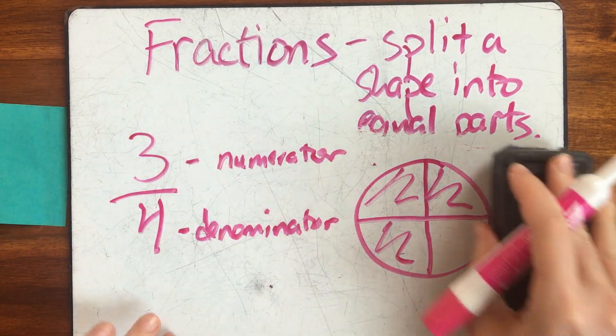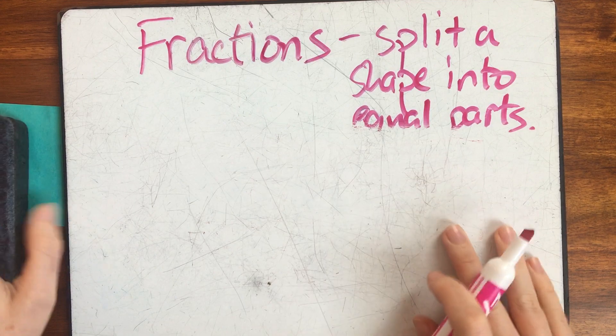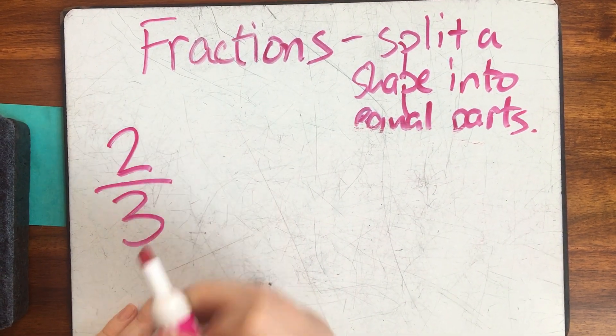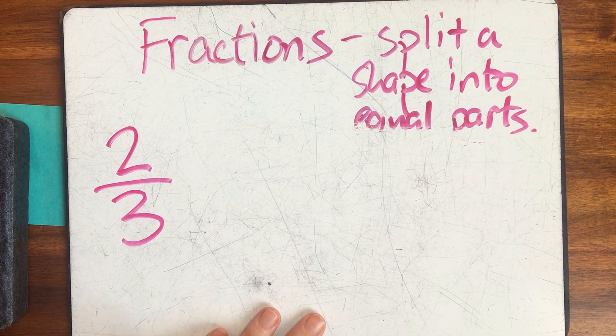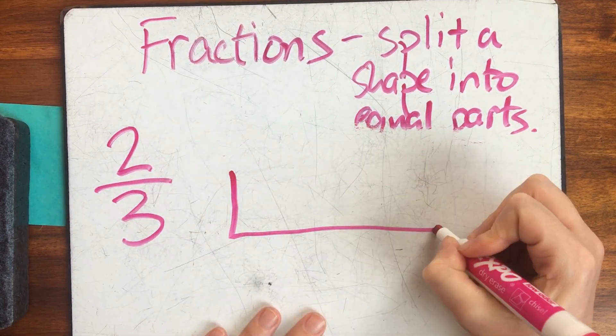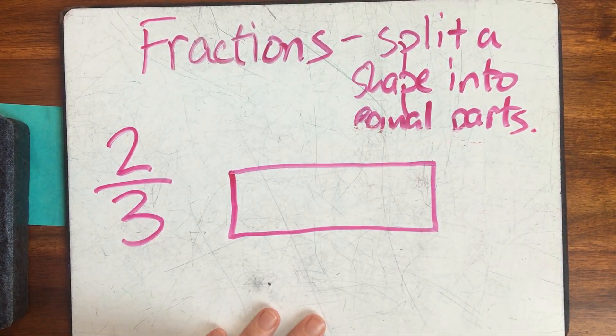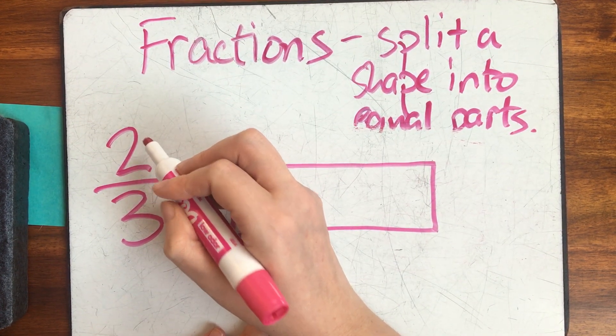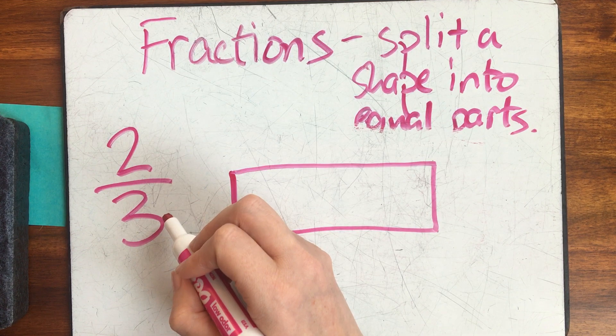I'll show you one more example. Two thirds. This time, let me use a rectangle to represent. Here's my numerator, two. That means I have two parts. And here's my denominator, three. That means there's three parts in the whole.